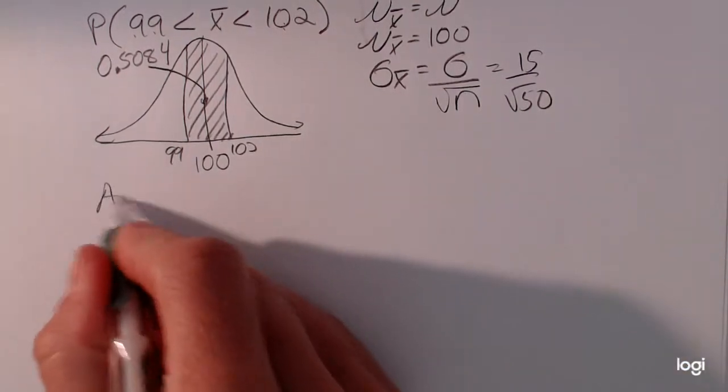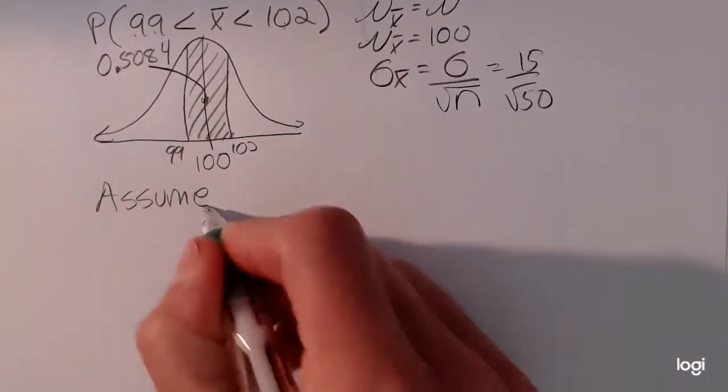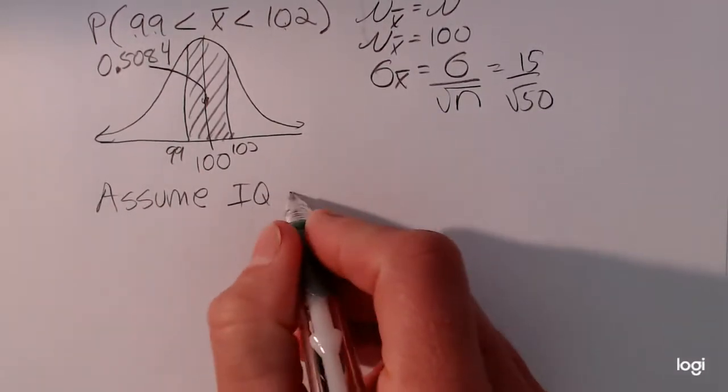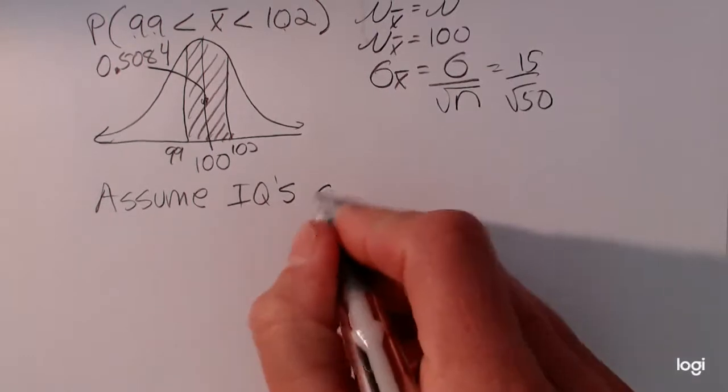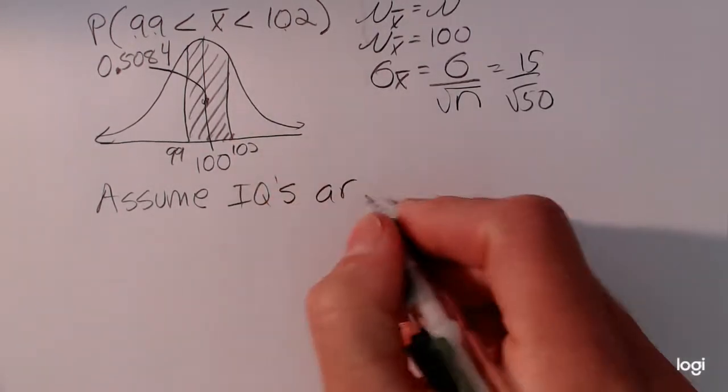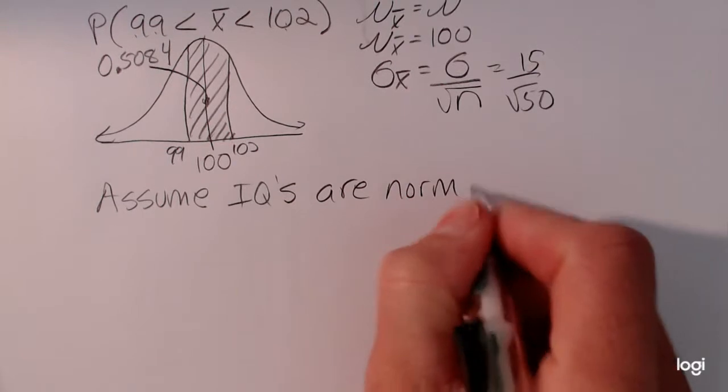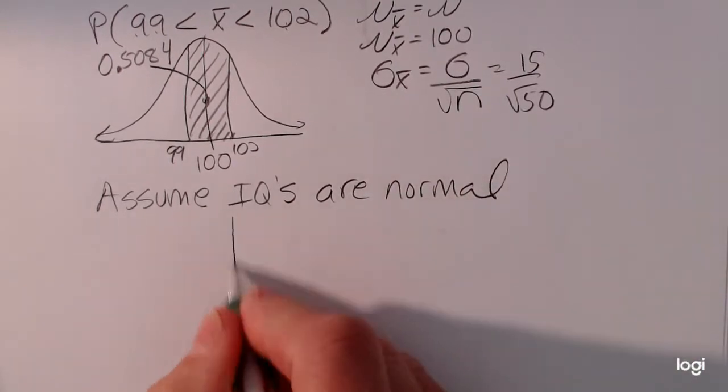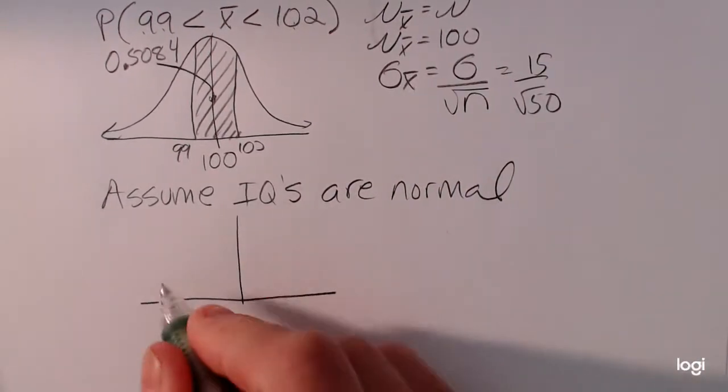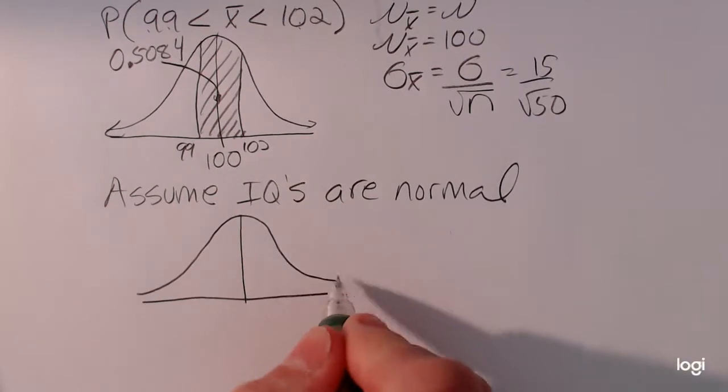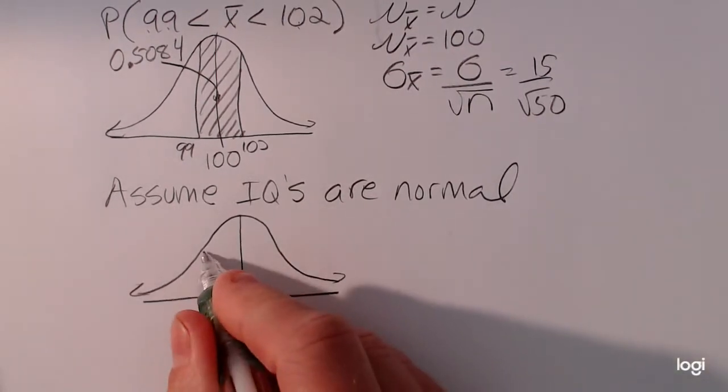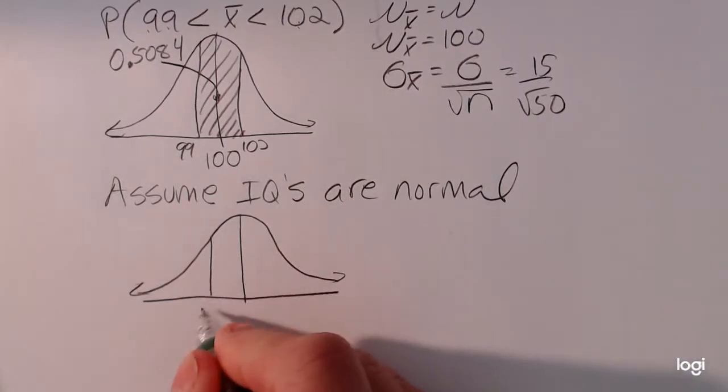To do that, I have to now assume that IQ scores, IQs, are normally distributed. So again, we're finding the area corresponding to the same endpoints.